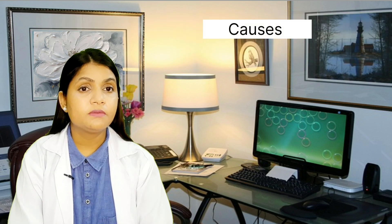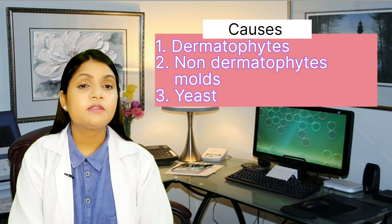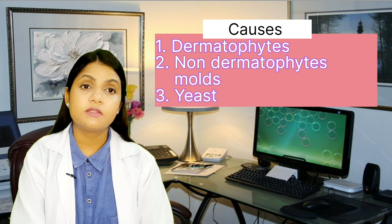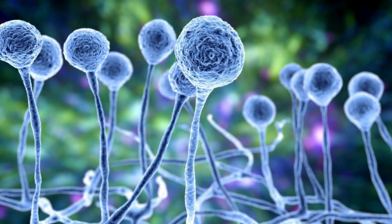It is caused by three types of fungus: first is dermatophytes, second is non-dermatophyte molds, and third is yeast. Fungi are microorganisms — parasitic plants which grow in damp, dark places like swimming pools, public showers, and locker rooms. The prevalence of fungal infection is very common around swimming pools and water areas.